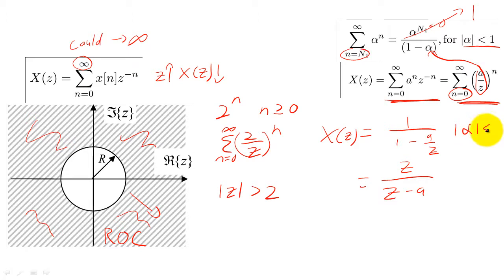If we double-check our previous example with 2 to the n, we again find that the ROC of the Z-transform is the absolute value is greater than 2.